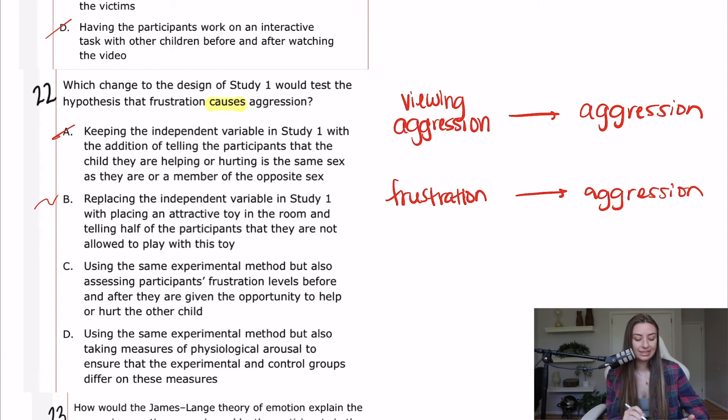C says using the same experimental method, but also assessing the participant's frustration level before and after they are given the opportunity to help or hurt the other child. So I think this would almost be opposite. This would be testing whether or not viewing aggression caused frustration. That would be like if you measured frustration levels before they started hurting the child or helping the child. I think it would also test whether or not helping or hurting another child cause frustration. So we're all talking about causing frustration, but that's not what we're looking for. The question stem's asking for something that states that frustration would cause aggression. So this is not a good answer choice. D using the same experimental method, but also taking measures of physiological arousal to ensure that the experimental and control groups differ on these measures. First off, I think that that would be a bad thing to do because we want the physiological arousal to be the same between the groups, but overall it doesn't have anything to do with frustration. Physiological arousal can be a number of different emotions or related to a number of different emotions. So that's not right. B is our best answer here.